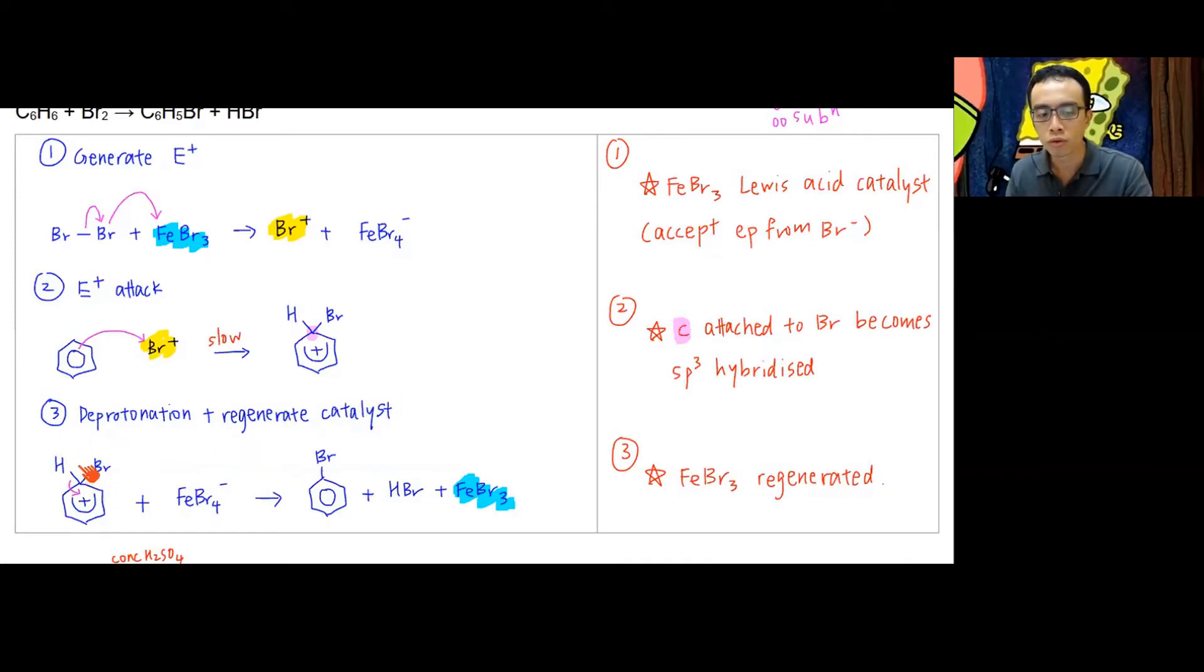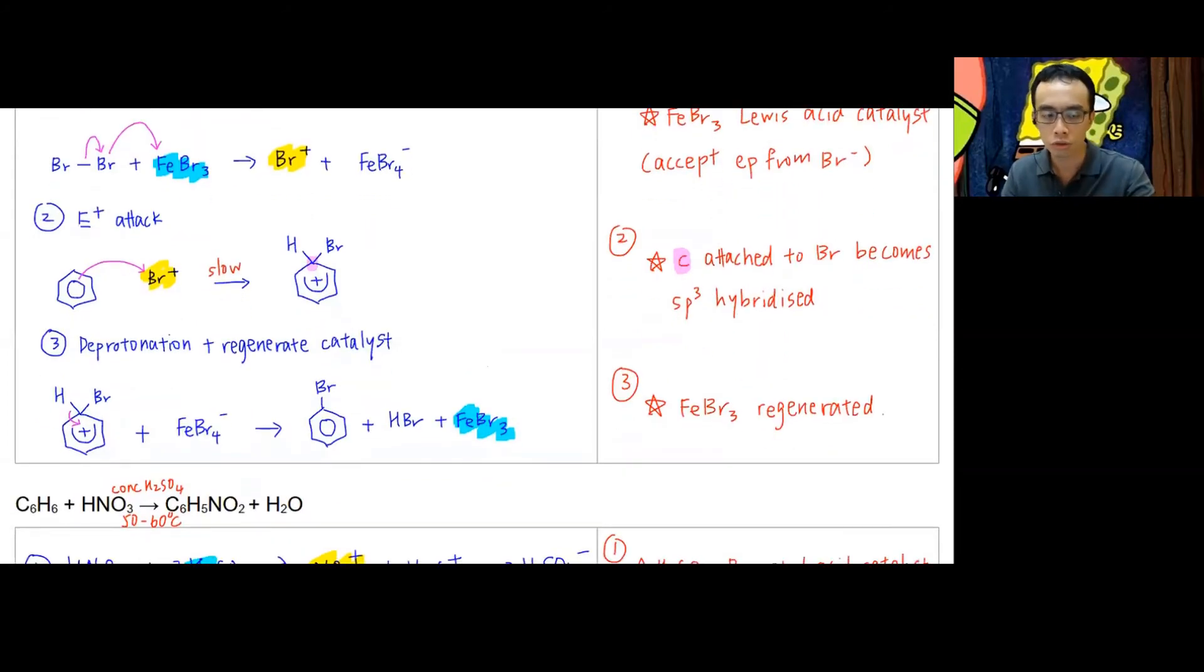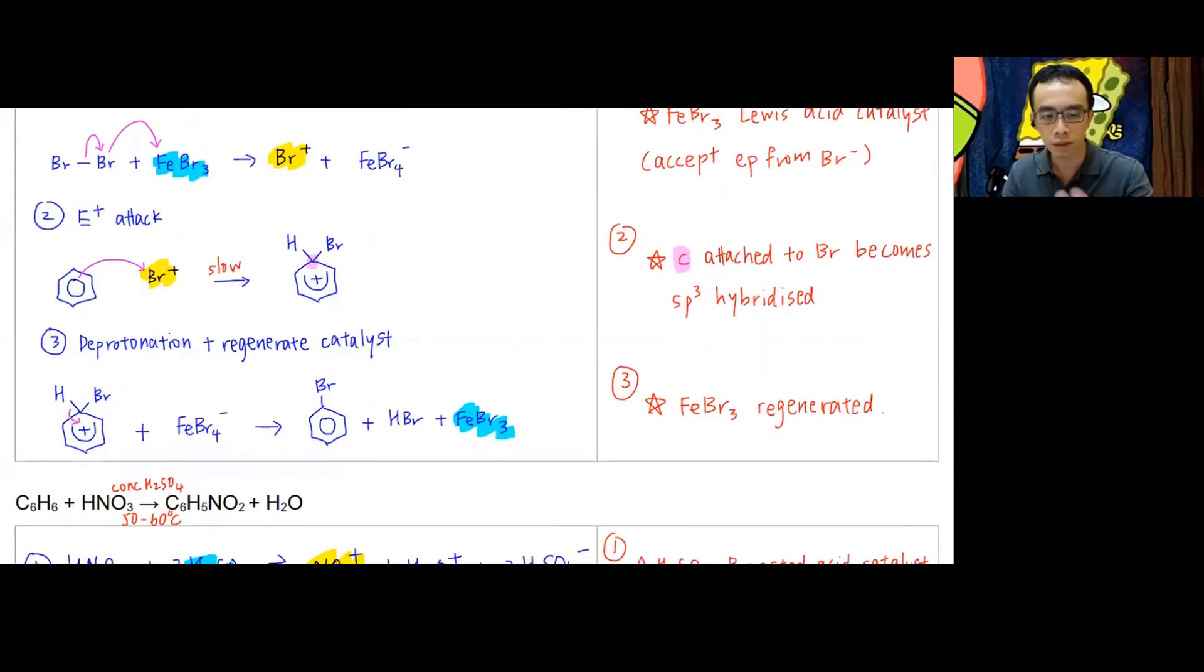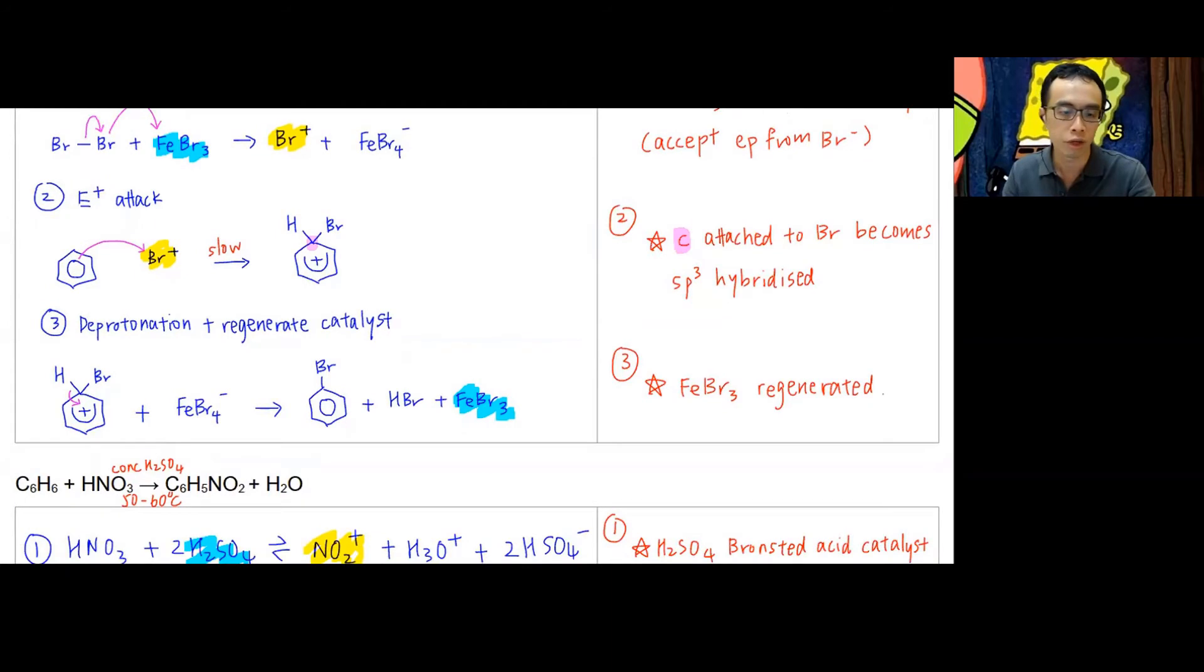The third step is deprotonation and regenerate my catalyst. I break the C-H bond; both electrons go back to benzene. H+ is being kicked out, and the H+ will combine with FeBr4- to form HBr and FeBr3—regenerate my catalyst. Of course, I form my bromobenzene as the product. The ring is restored, and FeBr3 as a catalyst is regenerated. You notice for electrophilic substitution: first step is I generate electrophile, after that electrophilic attack, after that deprotonation and regenerate the catalyst. It's a pretty standard three steps.